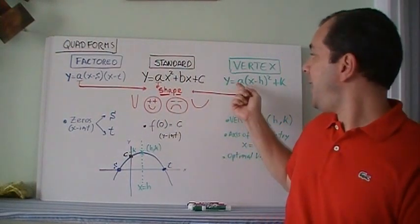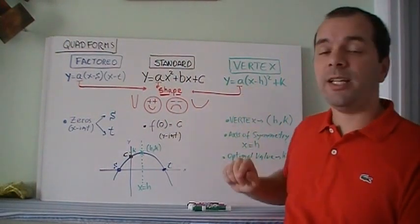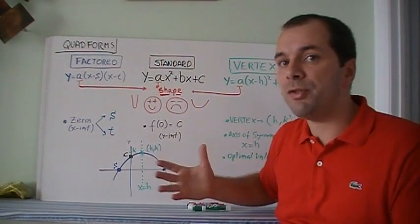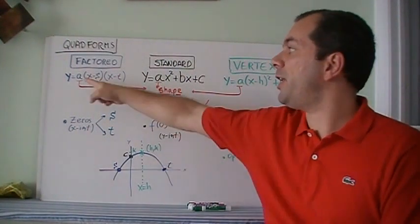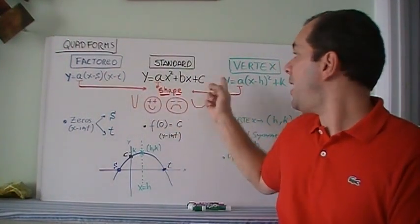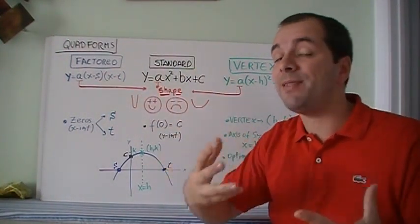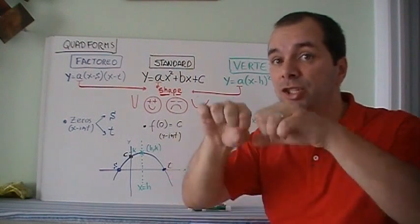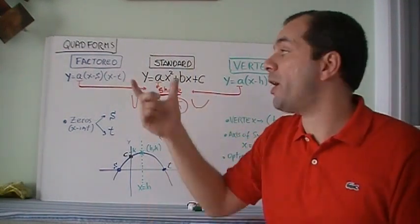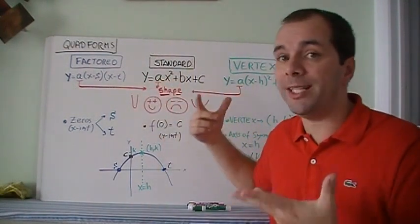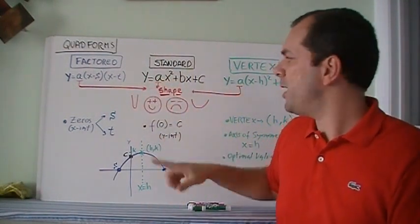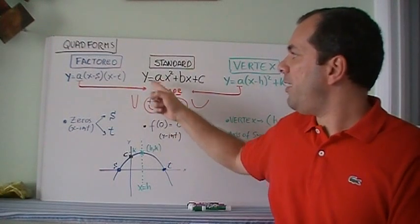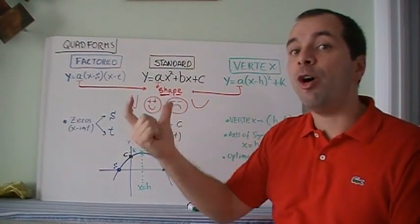The three forms are: a(x − s)(x − t) which is factored form; ax² + bx + c which is standard form; and a(x − h)² + k which is vertex form. Notice right away that the letter 'a' appears in all of them, because 'a' gives us the shape — and the shape does not change no matter what form you're using.